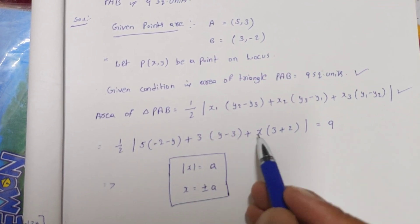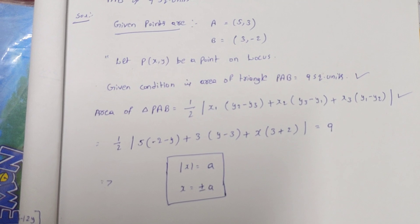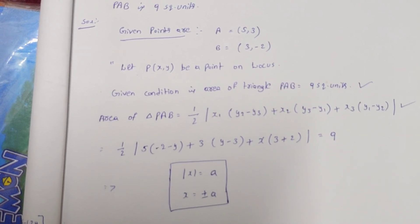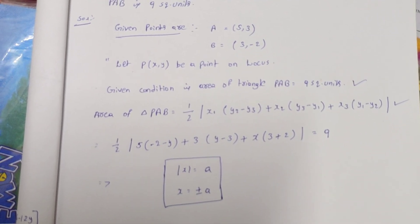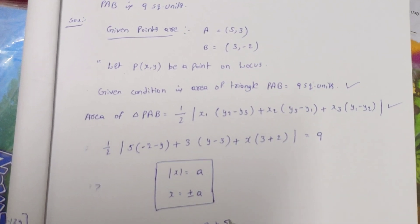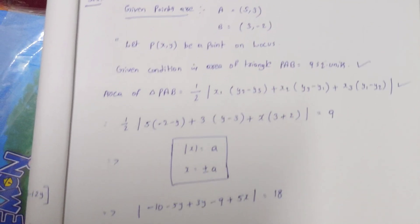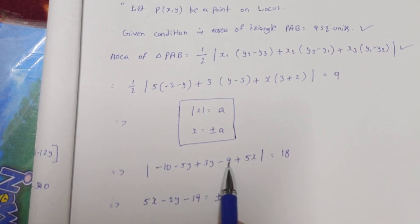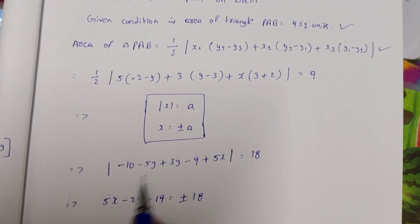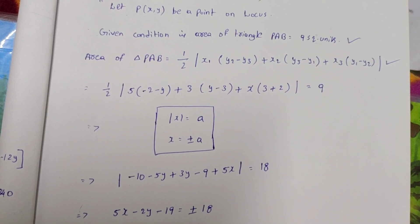Multiplying both sides by 2: so 1 by 2 times the expression equals 9, meaning the expression equals 18. Expanding: 5x minus 5y minus 10, plus 3y minus 9, plus 5x plus 2 — simplifying gives 5x minus 2y minus 19 equals plus or minus 18.